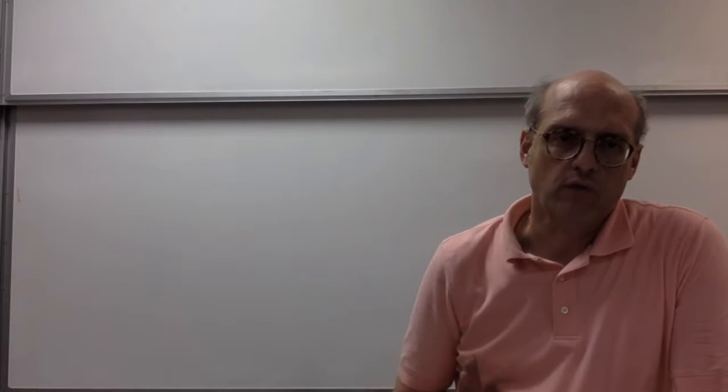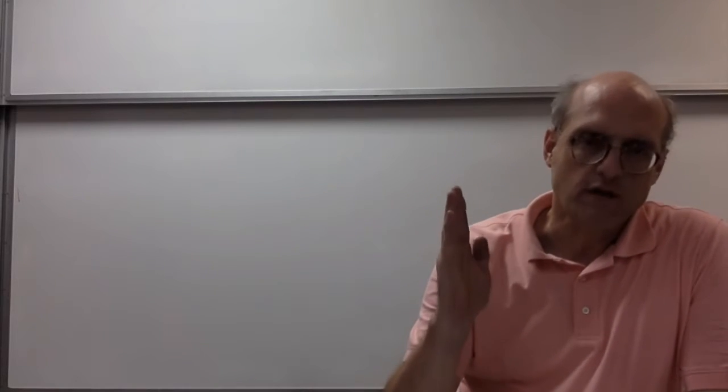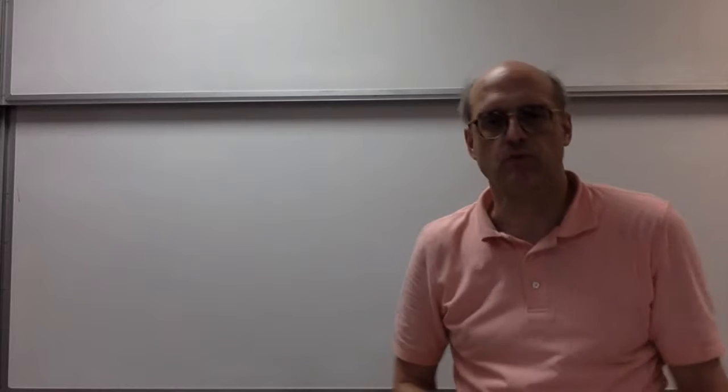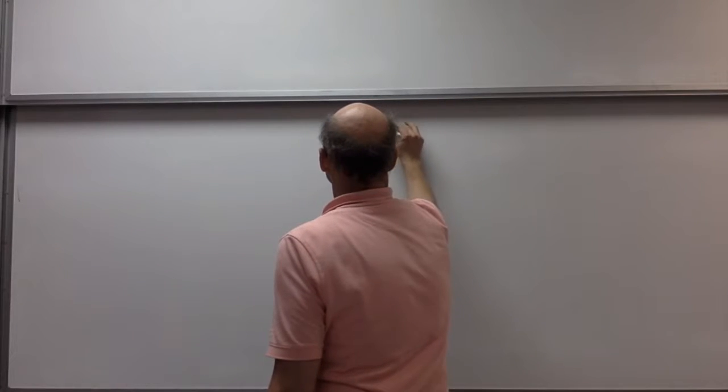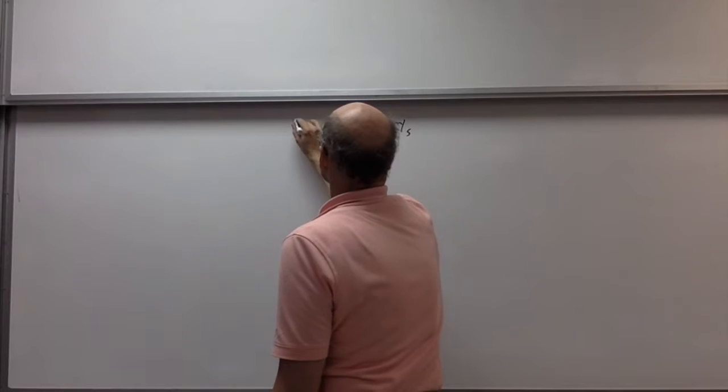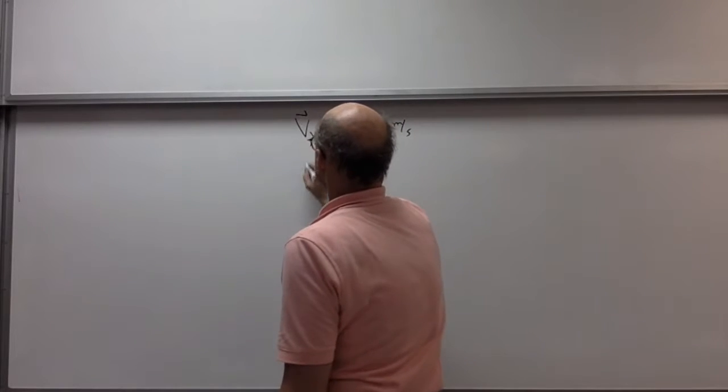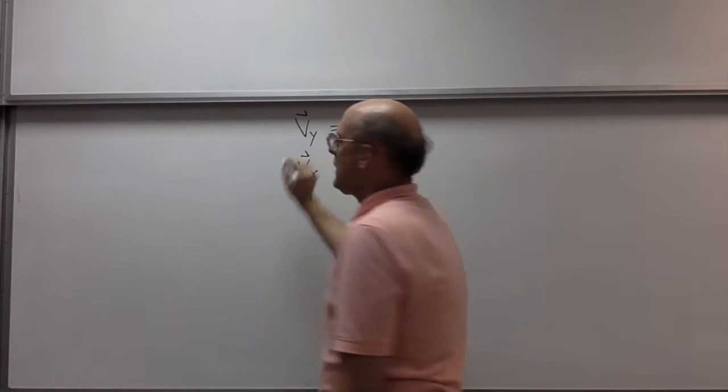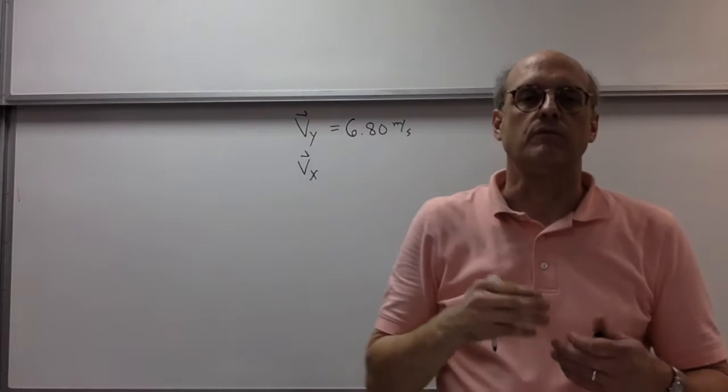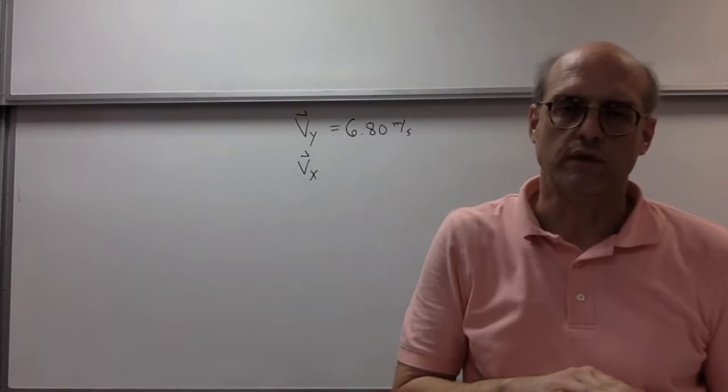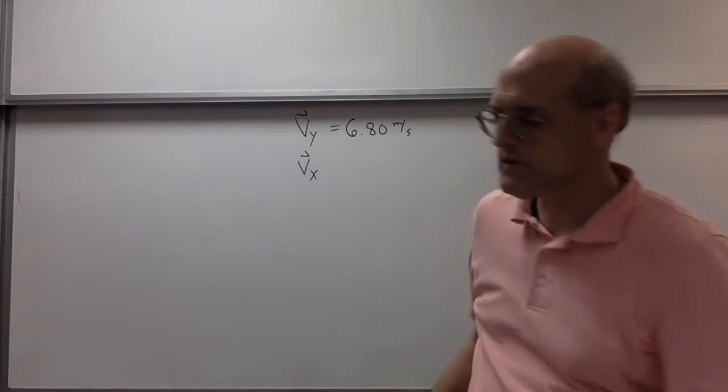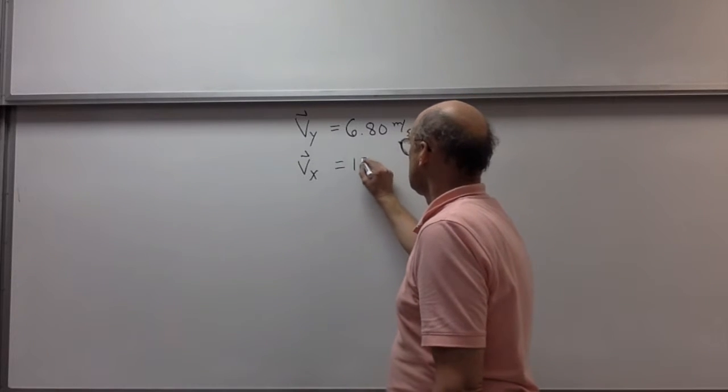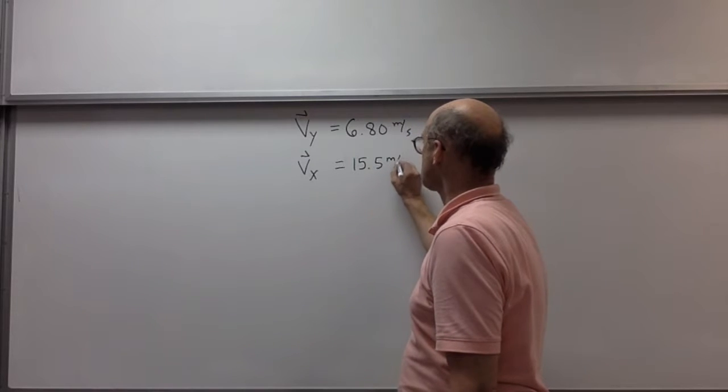We have the glider moving in the positive y direction at 6.8 meters per second, and we have the velocity of the glider moving in the positive x direction. That would be the velocity of the shadow, and that's 15.5 meters per second.